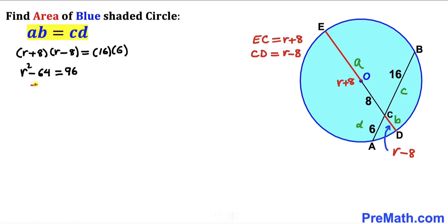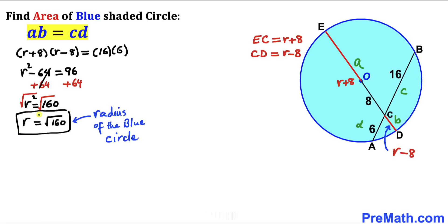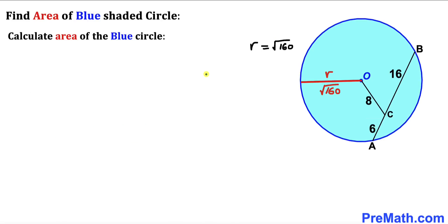Adding 64 to both sides, r² turns out to be 160. Taking the square root on both sides, our radius r equals the square root of 160. So we've figured out the radius of this blue circle as √160, and now we move to the final step of calculating the area.